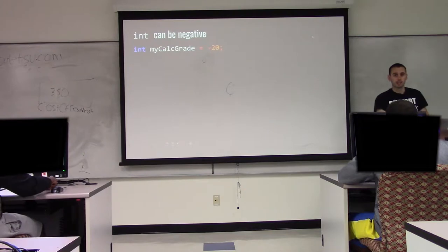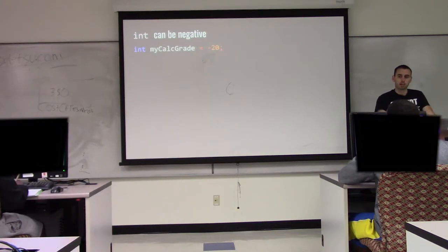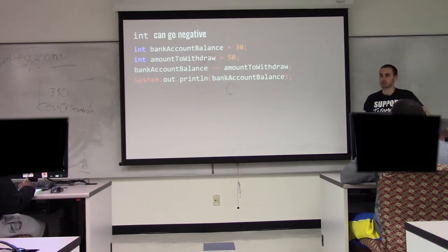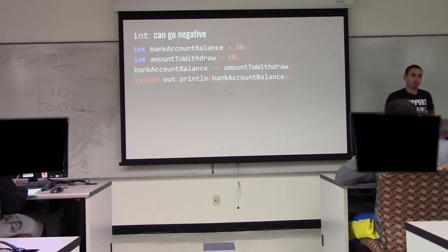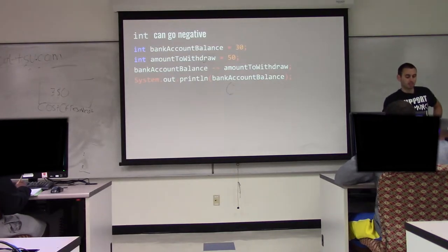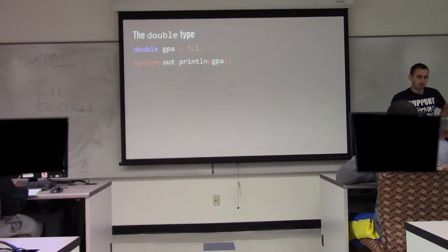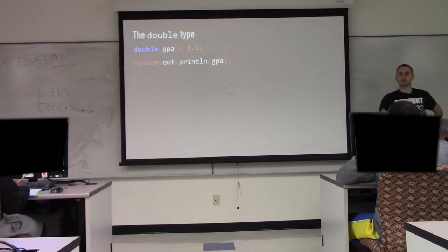Integers can be negative, and they can also go negative as a result of operations. If I have a $30 bank account balance and I withdraw 50, what's my balance? Negative 20. So this is going to print out negative 20.